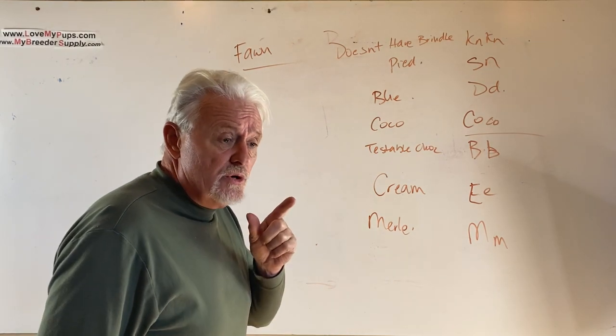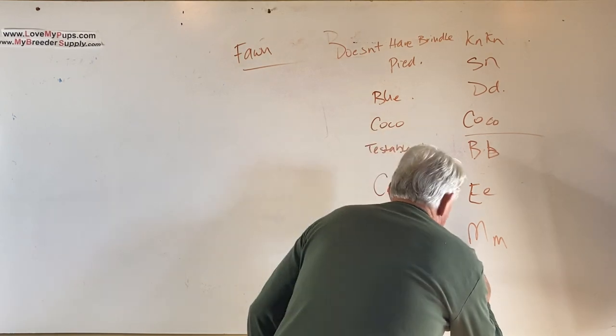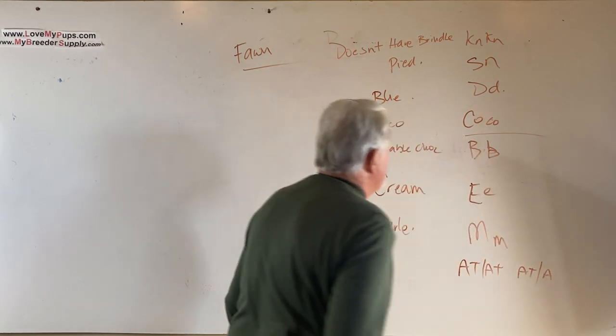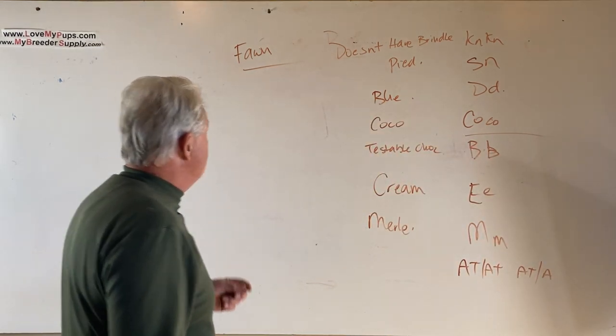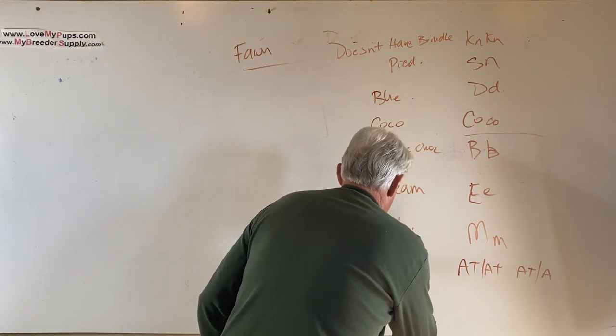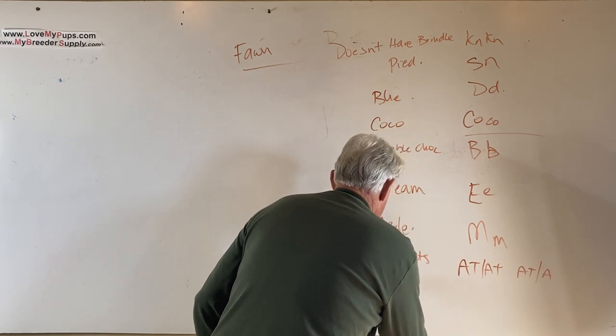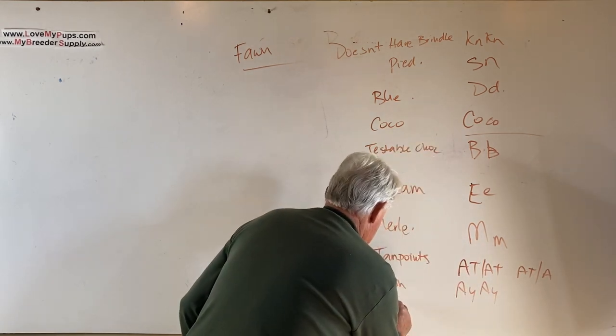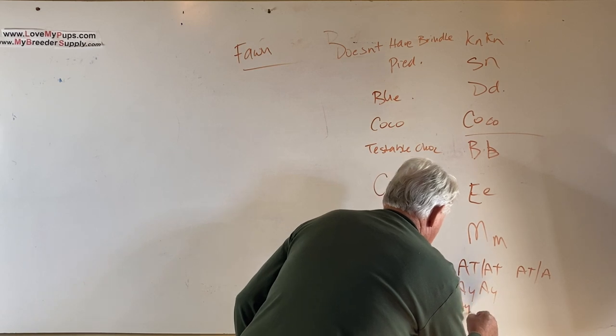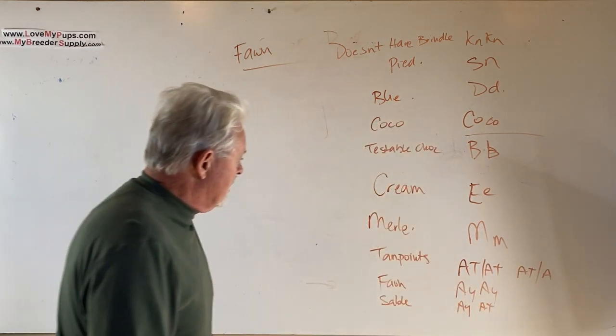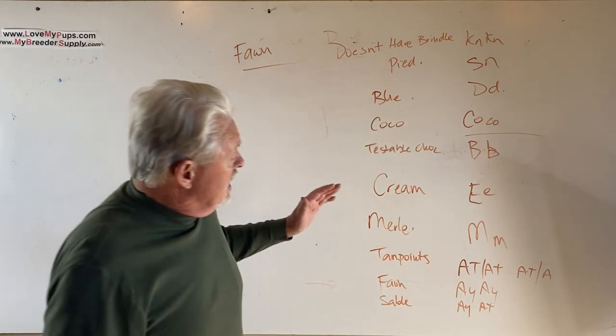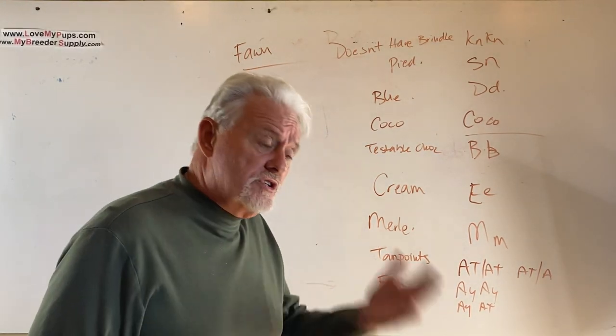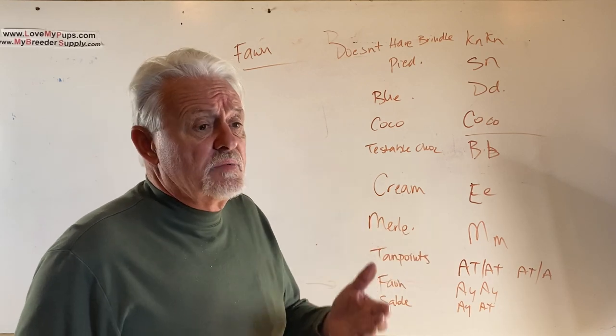So if you've got a puppy or a dog you're going to breed and you can see nice visible clear tan points, that dog is either AtAt or it is AtA. We know that. If that dog is a fawn dog, then it's going to be AyAy. And if it's a sable dog, it'll be AyAt. So you can look at the dog and get a good idea what's going on with the tan points. You can also look at the parents. If your dog doesn't have tan points but you have a parent that does have tan points, here's the possibilities.